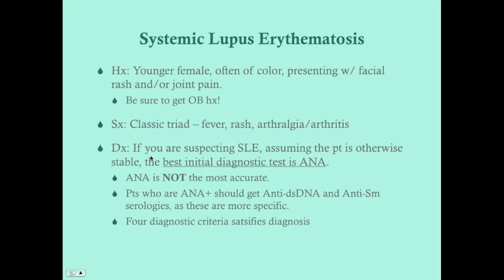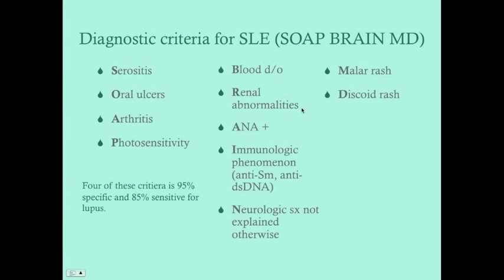For diagnosis: if you're suspecting SLE and the question asks for the best initial diagnostic step or the best next step in management — assuming the patient is otherwise stable, not coughing up blood, doesn't have a 104-degree fever suggesting infection, and doesn't have such severe joint pain requiring immediate NSAIDs — the best initial diagnostic test is an ANA (antinuclear antibody). If it comes back positive, this helps check off another diagnostic criterion.